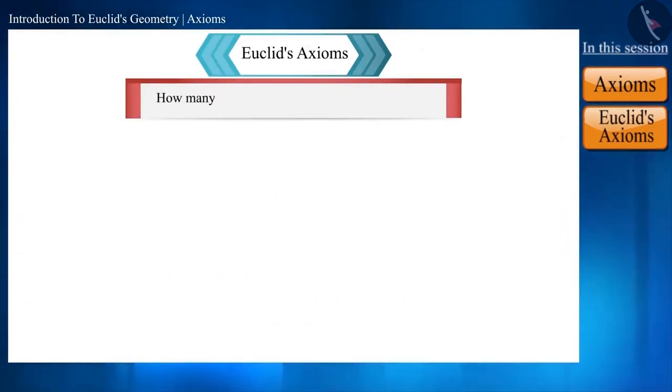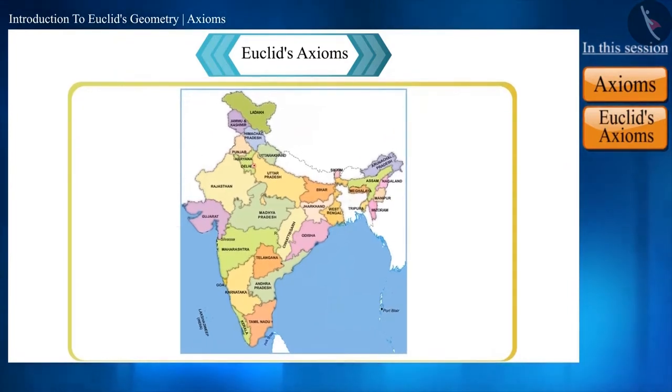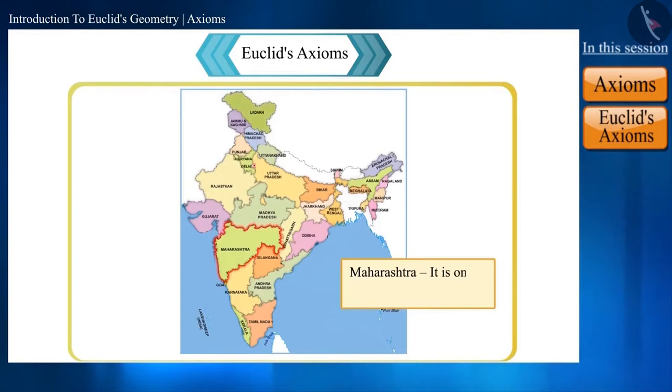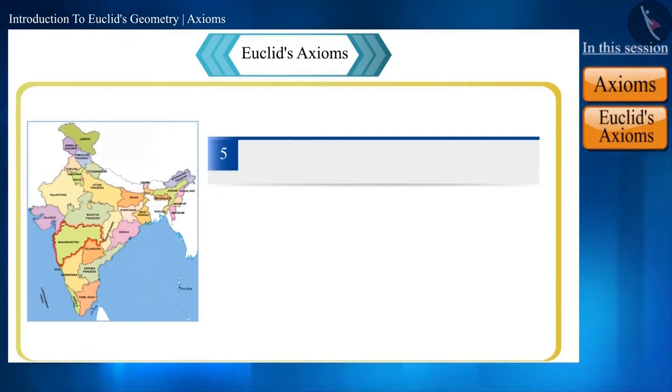Before coming to Euclid's fifth axiom, let's see a simple question. Tell us how many states there are in our country India? Yes, there are a total of 28 states. That is, India is divided into 28 states. If we look at one of these states like Maharashtra, then it is certain that it will be smaller than India because it is only a part of India.